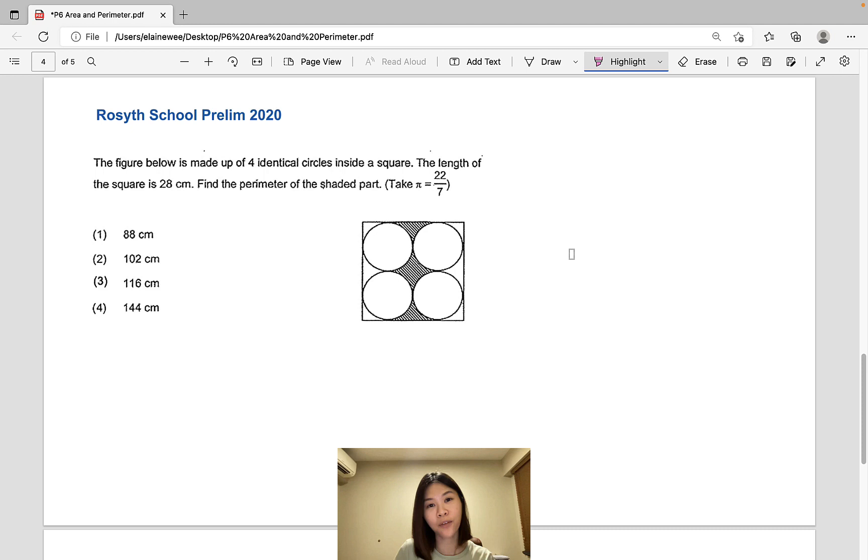Now let's take a look at our fourth question from Rosyth School. This question is dealing with circles. The figure below is made up of 4 identical circles inside a square. The length of the square is 28 cm. Find the perimeter of the shaded part. So I've shaded the perimeter that we are supposed to calculate. Let's analyze this.